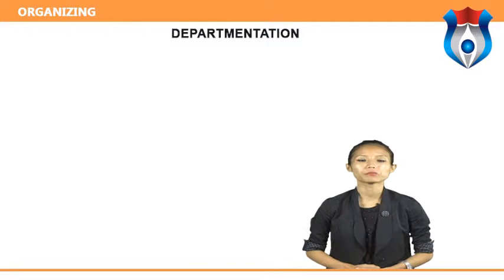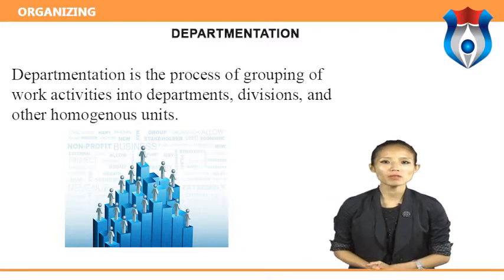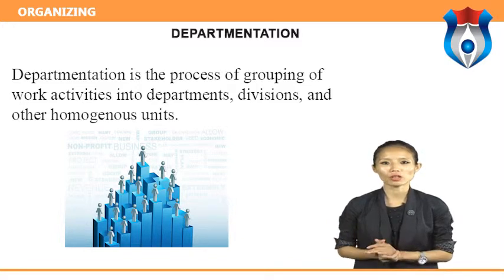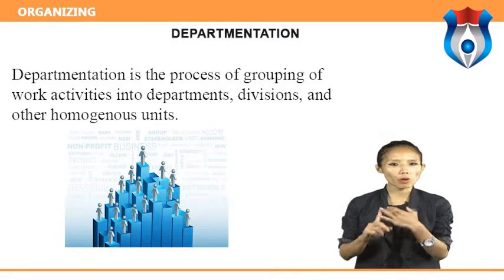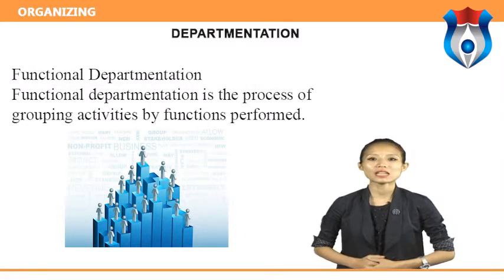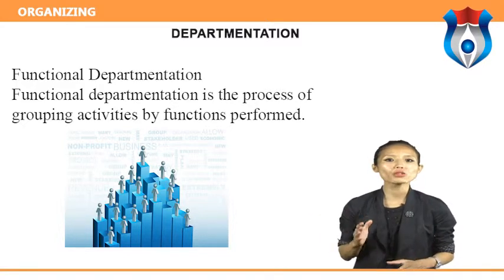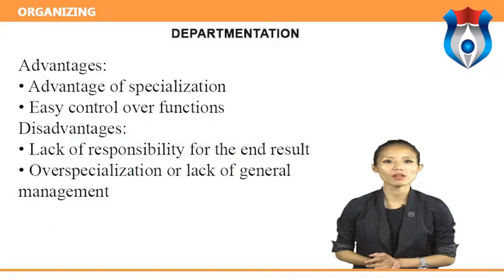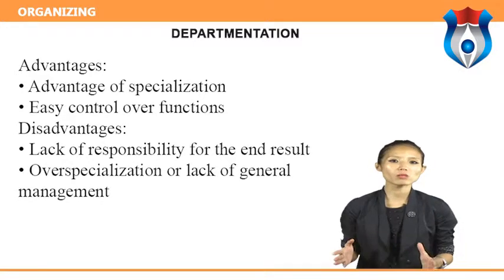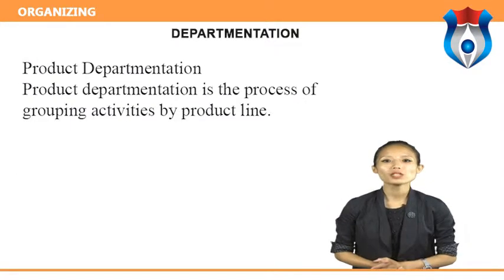Departmentation is the process of grouping work activities into departments, divisions, and other homogeneous units. Key factors include: it should facilitate control, ensure proper coordination, and take into consideration the benefits of specialization. Functional departmentation is the process of grouping activities by function performed; it can be used in all types of organizations. Advantages include specialization and easy control over functions. Disadvantages include lack of responsibility for the end result and over-specialization or lack of general management.